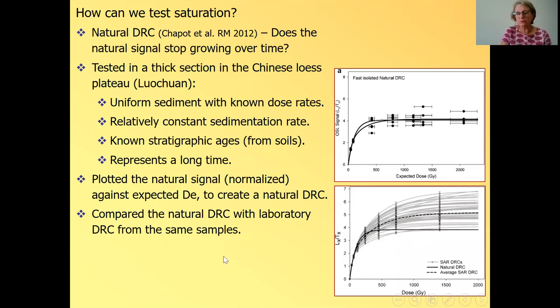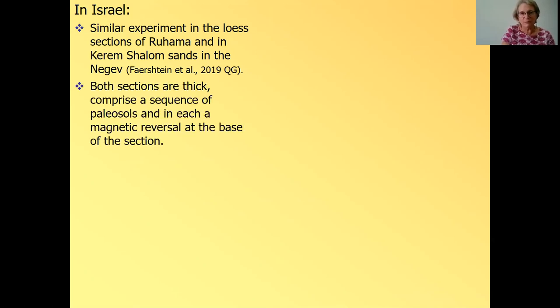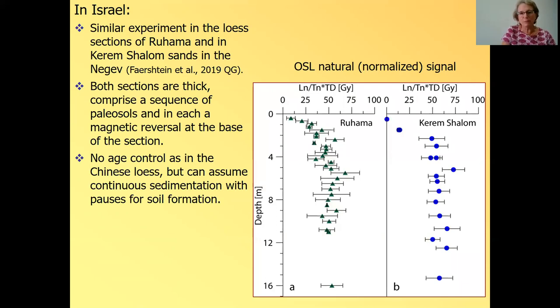And you can see that laboratory does not mimic nature very well. And in the laboratory, the signal keeps on growing, even though we know that the sample is saturated. So we have to be very careful of any sample beyond 150 gray, because even if the signal can grow in the lab, it doesn't mean that we're not getting an underestimated age. And in Israel, a similar experiment in loess, a section in Ruhama and in Kerem Shalom Sands in the Negev was carried out by Gala Feirstein.